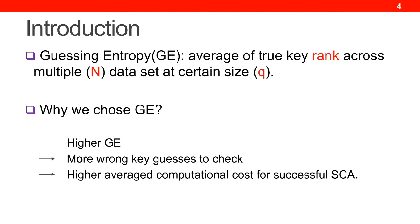Considering this concept, given a random dataset in a side-channel attack, a higher GE value means more wrong keys are likely to be checked before the attacker reaches the correct key. As a result, a higher average computation cost is needed for a successful side-channel attack. That is why GE is commonly used to evaluate the resistance against side-channel attacks.